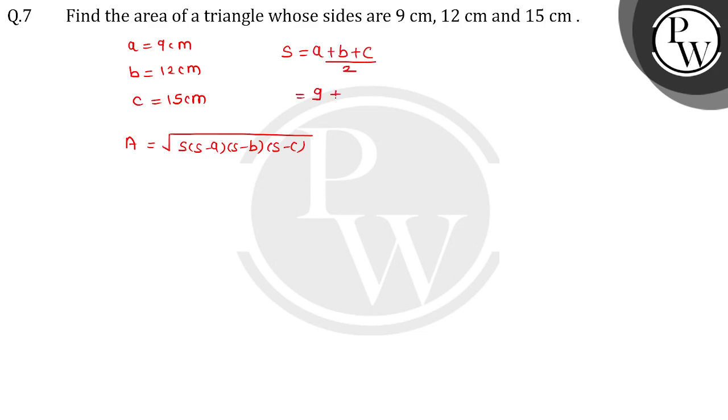A is 9, B is 12, C is 15. 12 plus 9 is 21, 21 plus 15 is 36, divided by 2. We have 18.